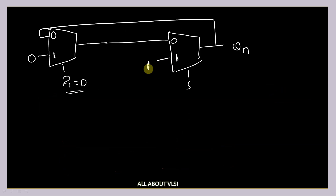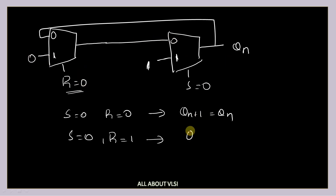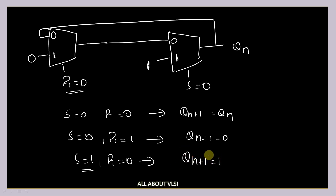So this is my SR latch using 2x1 multiplexers. Let us verify: if S is equal to 0 and R is equal to 0, the output travels to the input and comes back — so QN+1 is QN itself, which is the hold condition. If S is equal to 0 and R is equal to 1, we select the pin with 0, so QN+1 is equal to 0 — the reset condition. If S is equal to 1 and R is equal to 0, we take the input with 1, so QN+1 is equal to 1 — the set condition. These are the working conditions of my SR latch using 2x1 multiplexers.